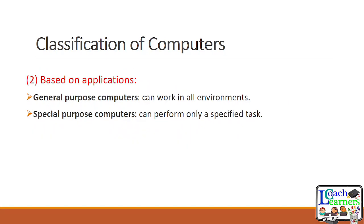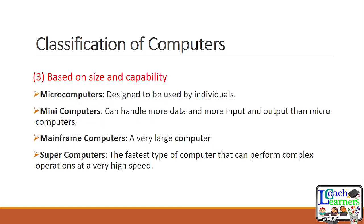The second way to classify computers is by application. General-purpose computers can work in all environments — for school, research, or office work. Special-purpose computers are dedicated to specific tasks, such as servers in organizations performing data analysis. The third classification is by size and capability, which includes micro computers, mini computers, mainframe computers, and supercomputers.